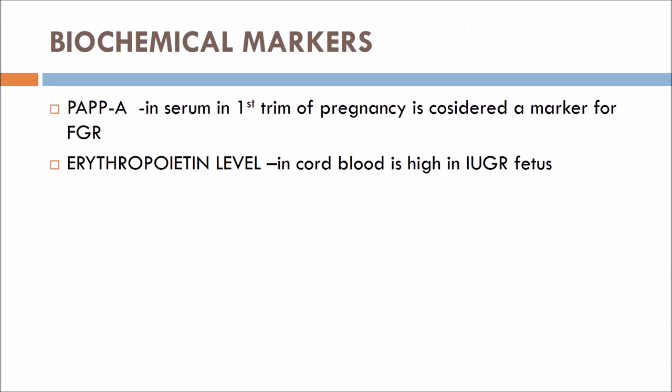There are two important biochemical markers. PAPP-A (pregnancy-associated plasma protein A) in serum during the first trimester is considered a marker for FGR. Erythropoietin level in cord blood is elevated in IUGR fetuses. Thank you.